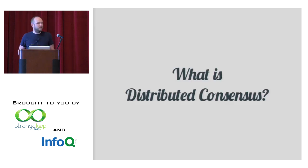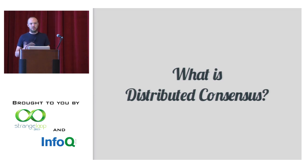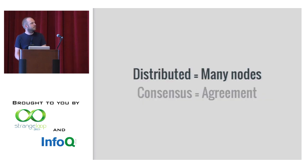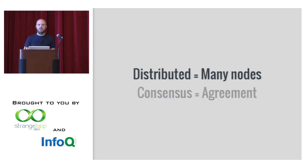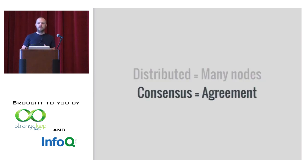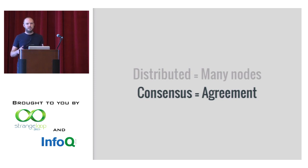Whenever I talk about distributed consensus, which isn't really a common topic to bring up, people always wonder what distributed consensus actually is. It's pretty simple when you break it down. Distributed just means you have a bunch of nodes, and consensus just means you're coming to an agreement — so you have a single value or system state to try to come to an agreement on.